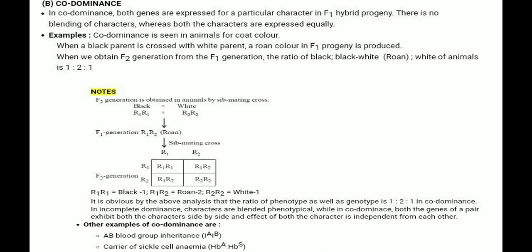It is obvious that the phenotype ratio as well as genotype ratio is 1:2:1. In incomplete dominance, characters are blended phenotypically, while in co-dominance, both genes of a pair exhibit both characters side by side, with the effect of both characters independent from each other. An example is blood group with IA and IB alleles, where A and B are equally dominant and O is recessive. When both IA and IB are present, the AB blood group is expressed.